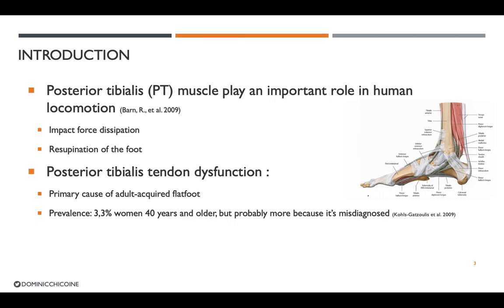The posterior tibialis muscle plays an important role in human locomotion as it dissipates the impact force during loading and reciprocates the foot during propulsion. Posterior tibialis tendon dysfunction is the primary cause of adult acquired flat foot. Its prevalence in the population is 3.3% of women 40 years and older, but there's probably more because it's often misdiagnosed by different healthcare professionals.